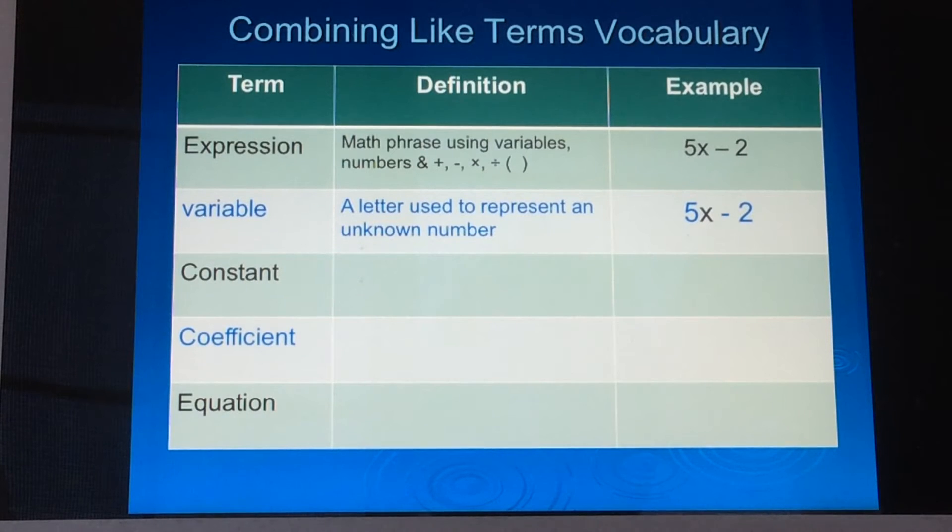The next term is constant. The definition of constant is a number in an expression. And in the expression 5x minus 2, the negative 2 is going to be your constant. Now make sure when you're identifying it that you always take the sign in front of the number as well, because that is part of that term. So it is a negative 2 in this case.